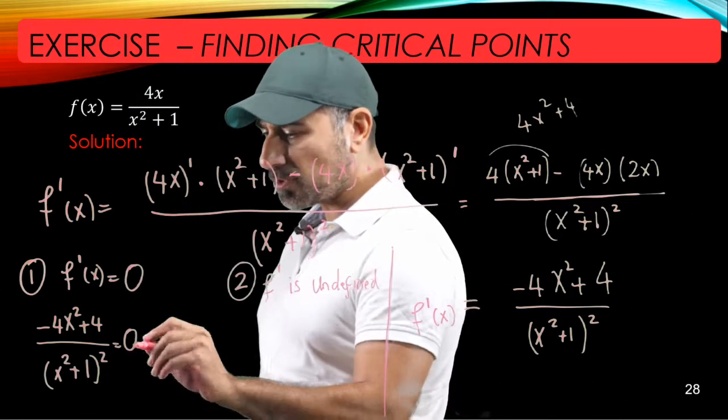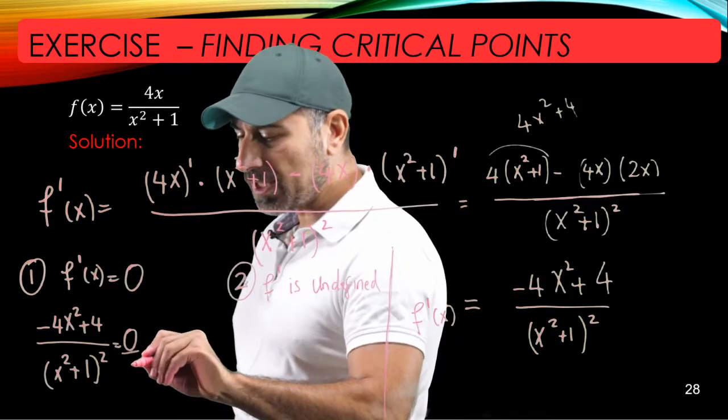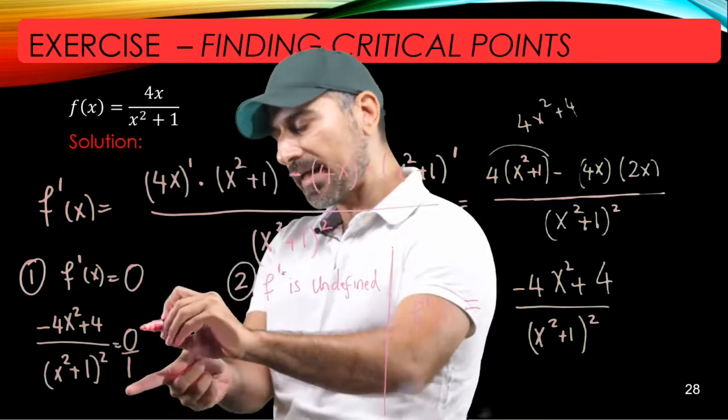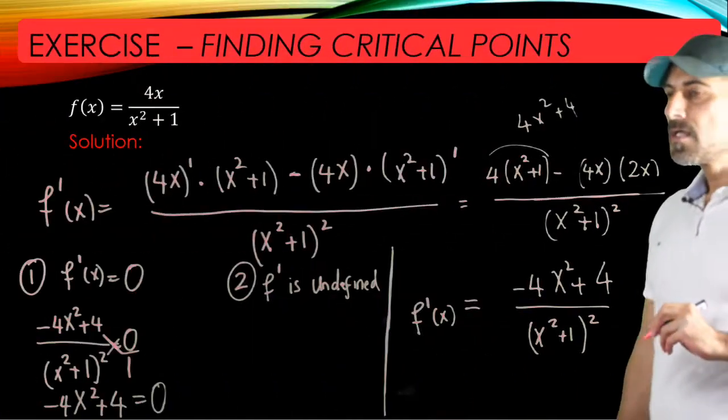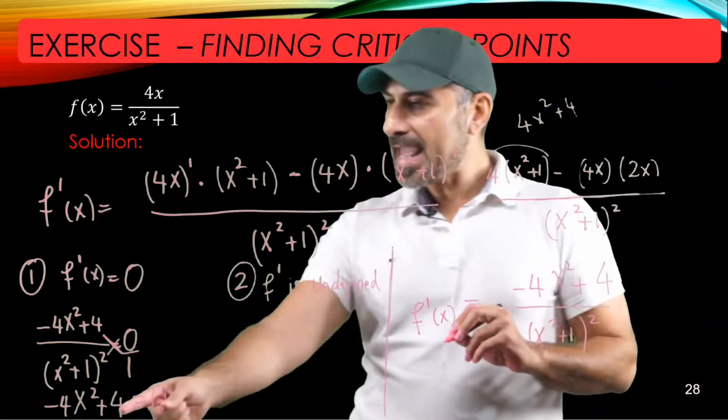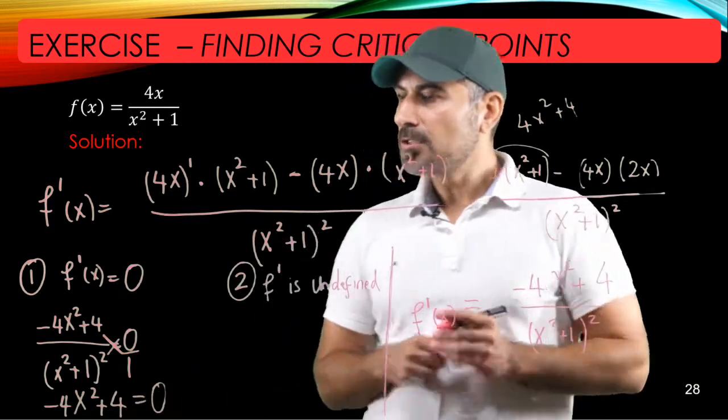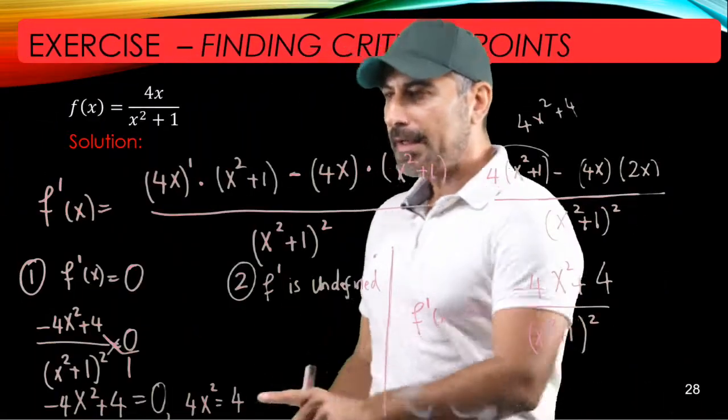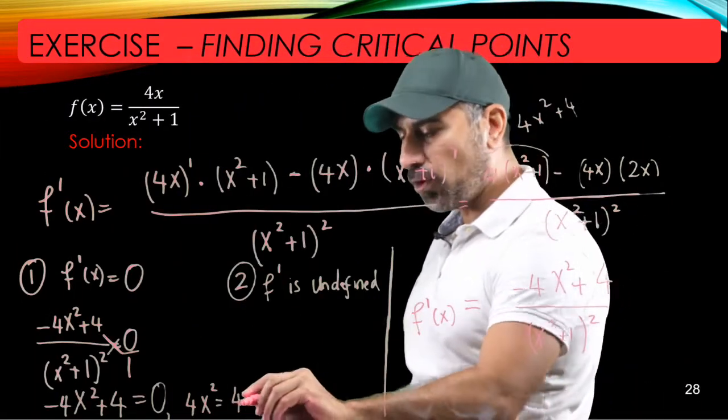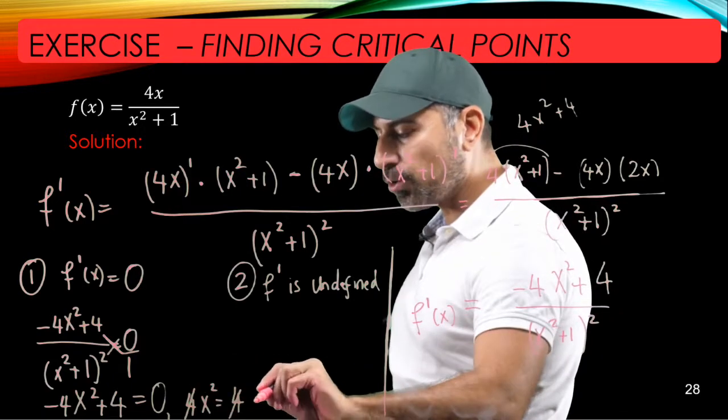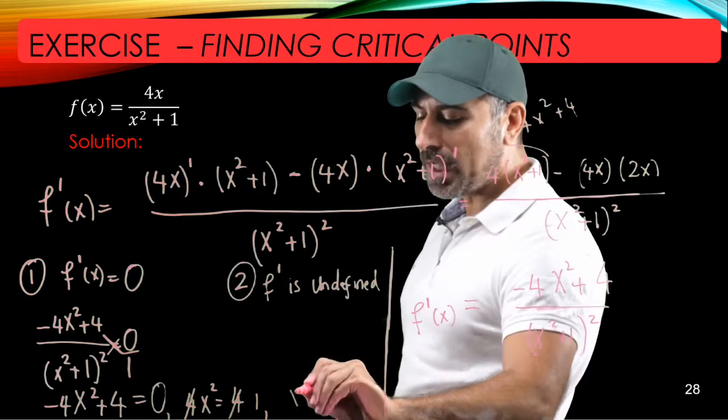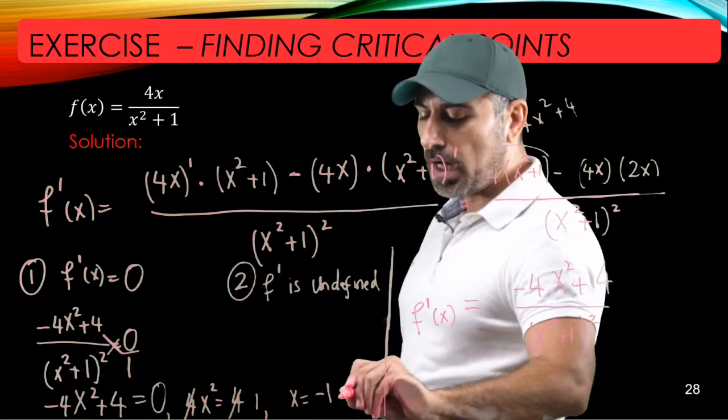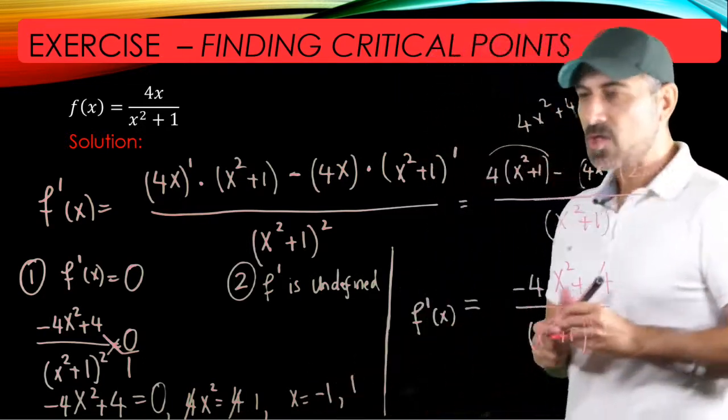So to solve this equation we're going to do the cross product. I'm going to put a hypothetical 1 here as if this is a quotient as well so that I can do the cross product. We'll add 4x squared to both sides of the equation. And now we have 4x squared equals 4. Simplifying, we're solving x squared equals 1. We have two solutions for that: one is negative 1, the other one is 1.